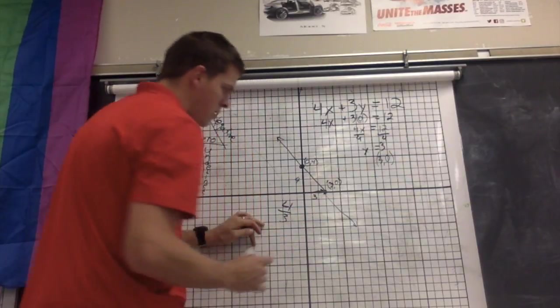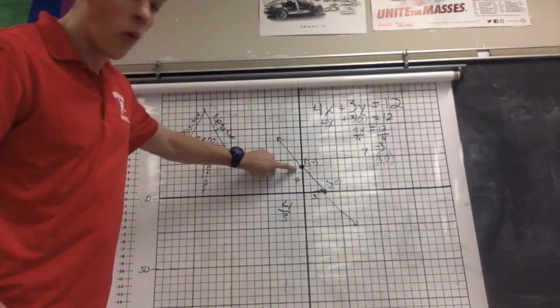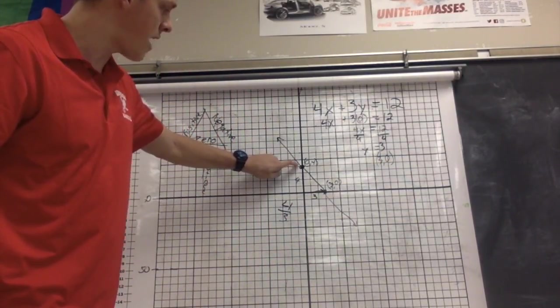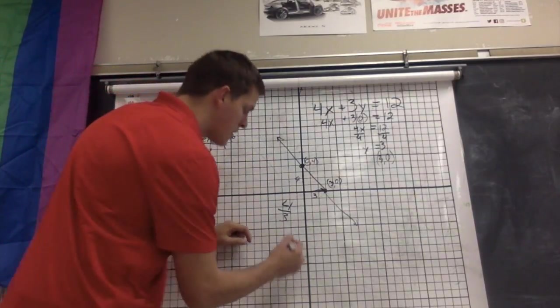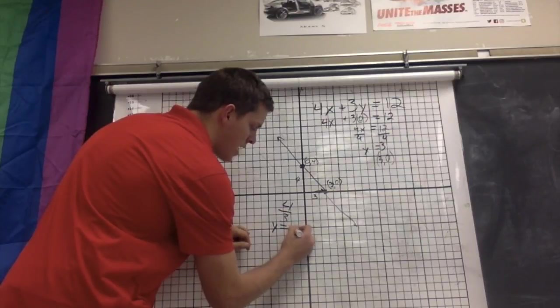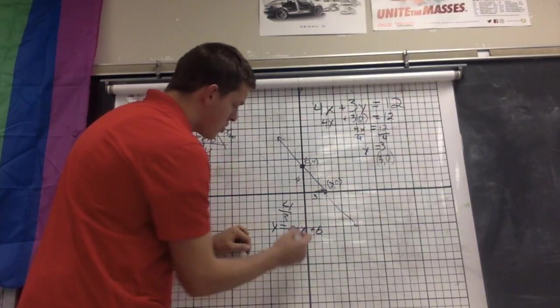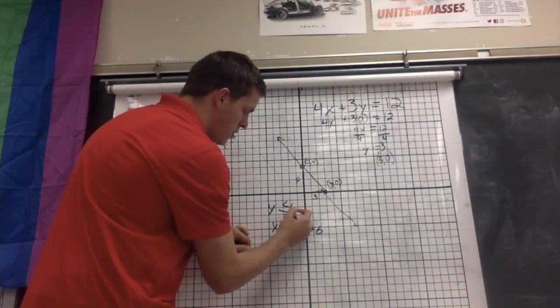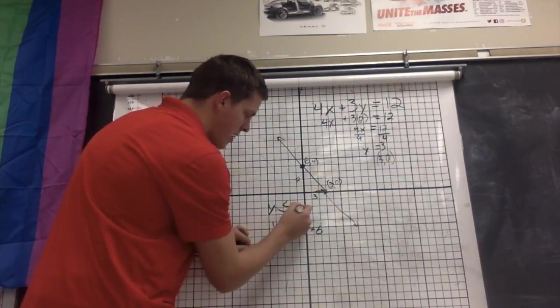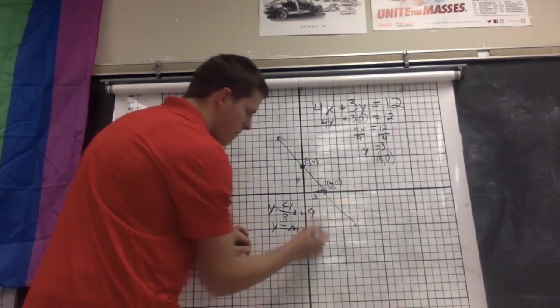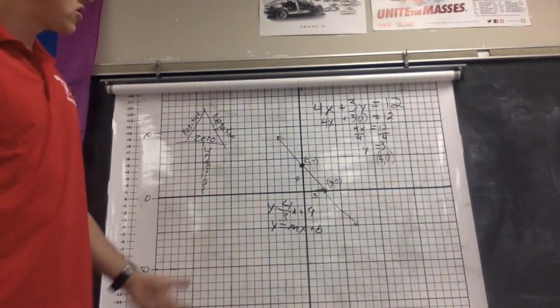So my slope is going to be negative 4 over 3, and my y-intercept is at 4. So my equation, if I put it into slope intercept form with y equals mx plus b, should be y equals negative 4/3x plus 4.